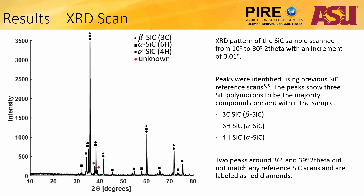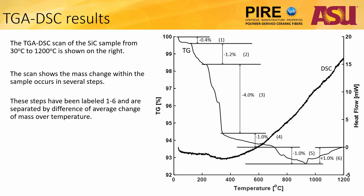Two peaks around 36 and 39 degrees did not match any reference SiC scans and are labeled as red diamonds. Looking at the TGA-DSC plot shown, the silicon carbide sample appears to lose mass in steps rather than gradually over time. It is broken down into six steps, each with varying levels of mass loss over temperature.